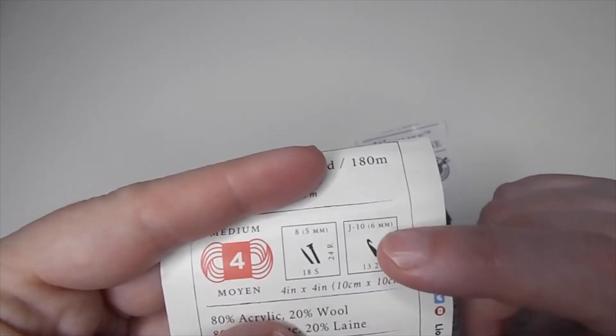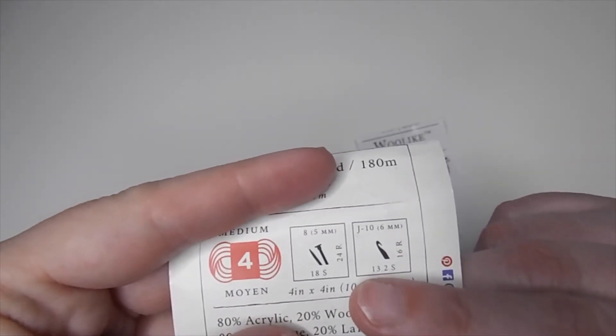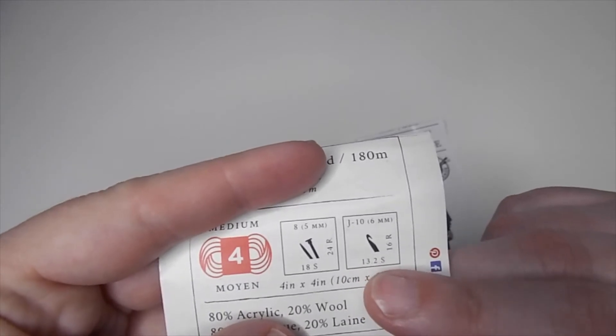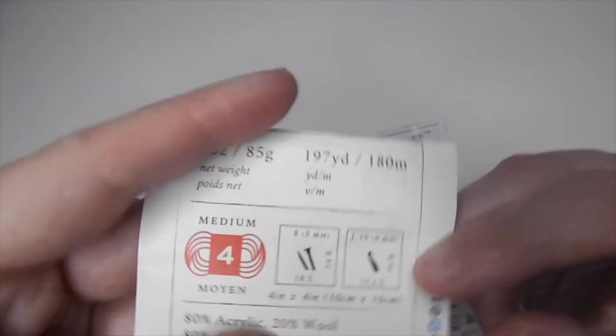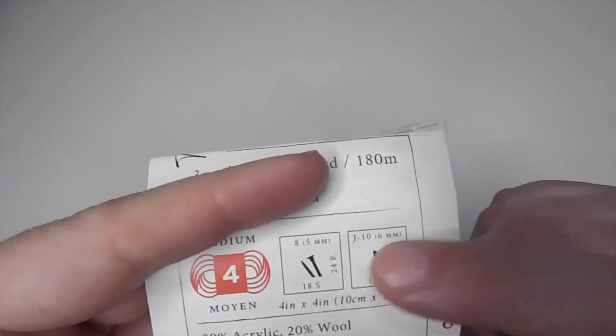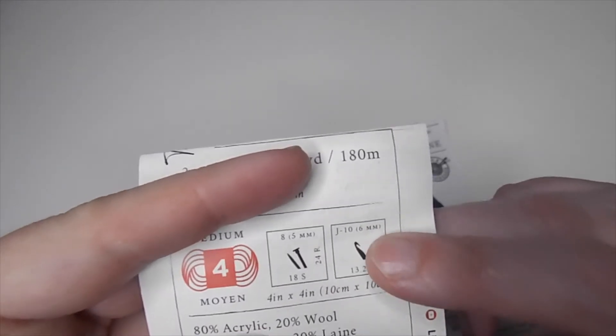If you do it with crochet, you will have 13.2 stitches by 16 rows using a J or 6 millimeter hook.